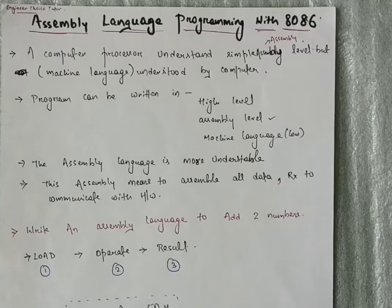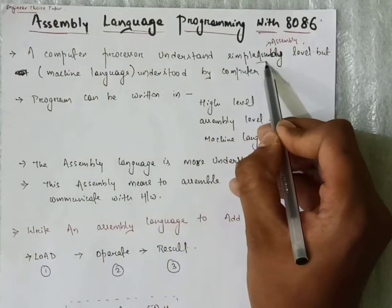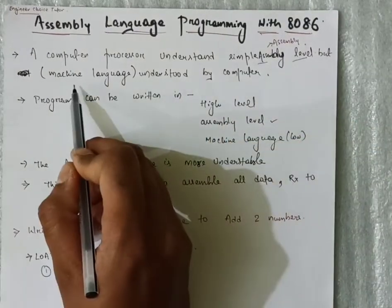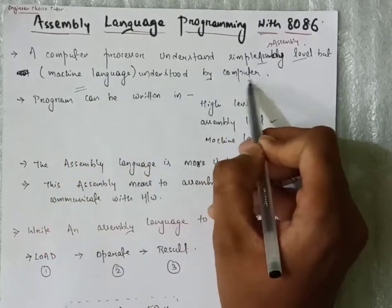So the definition: what do you mean by assembly language programming? This is the level of programming in which the microprocessor can easily understand. A computer processor understands simple assembly level, but machine language is understood by only computer.